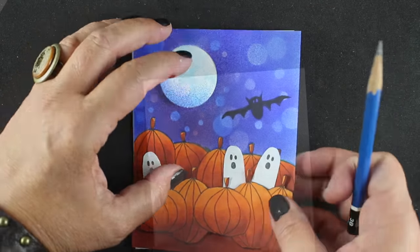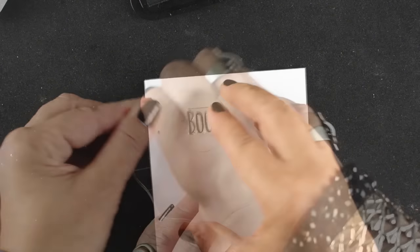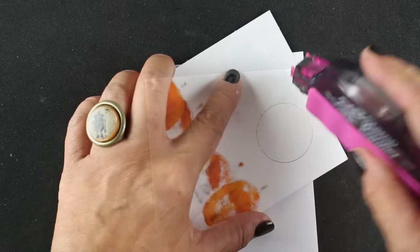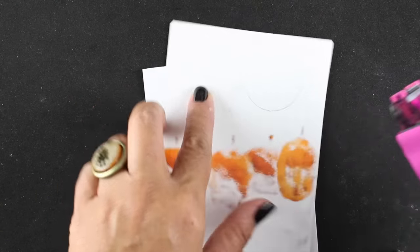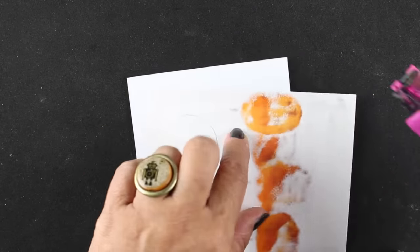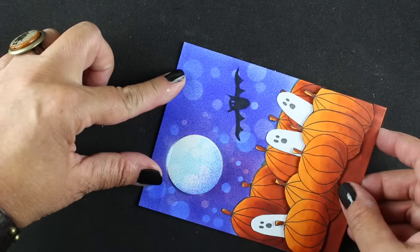I made a place to stamp my boo sentiment inside the moon. So when somebody lifts up that boo, they'll get to see the sentiment. They lift up the little moon, erased that line, added a little bit of Tombow Stamp Runner to the back to adhere it to the front of my card.